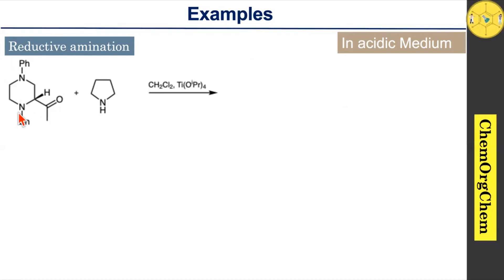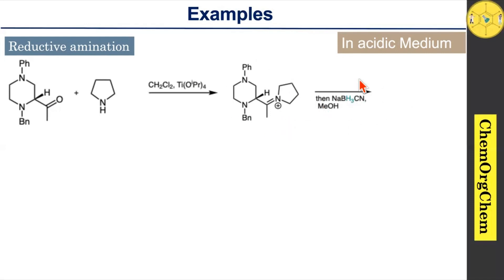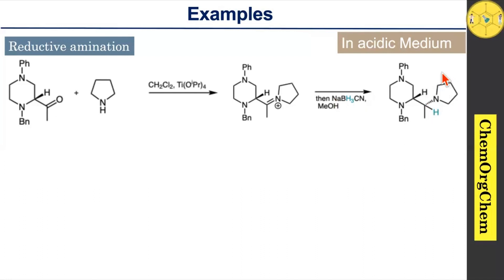Let's see some examples of reductive amination. This compound has a ketone functional group that reacts with pyrrolidine in the presence of a titanium-based Lewis acid to provide the corresponding iminium ion. This iminium ion is quickly reduced by sodium cyanoborohydride to give the corresponding reduced product. Now let's see the stereochemistry of this final product: the pyrrolidine part is present on the bottom face, meaning the hydride ion attack happened from the top face, since the bottom face is sterically crowded by the heterocyclic unit.